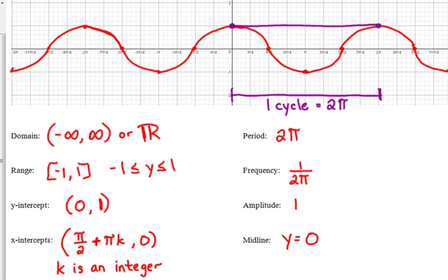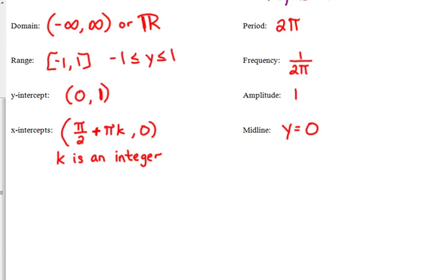Now, I'm getting ready to have you do a little investigative activity here to talk about what happens if we do some things to our function. Now, we're just going to look at cosine, but these rules still apply to sine. We're going to look at what happens if we throw some different constants in there.